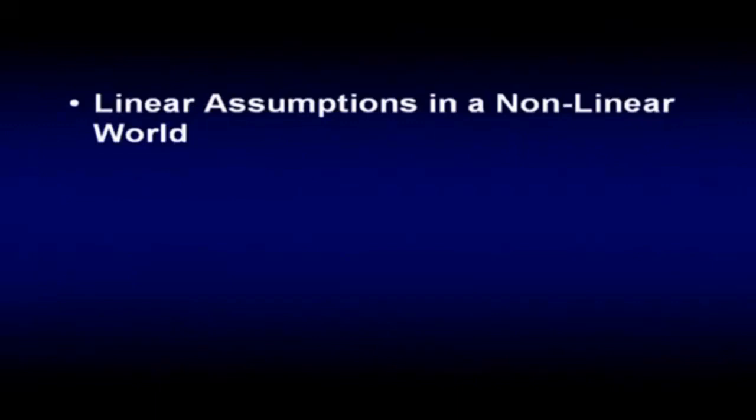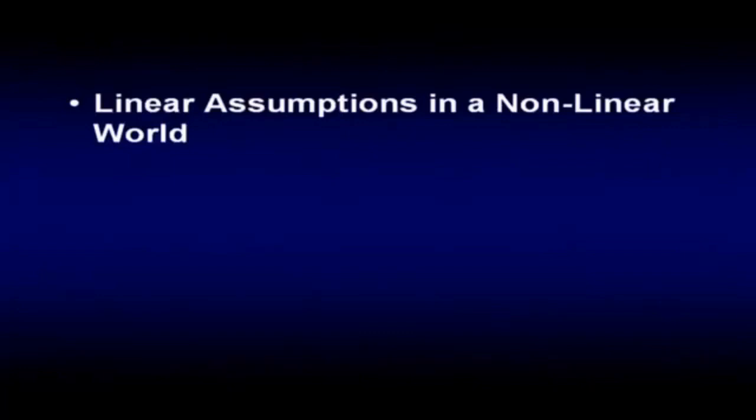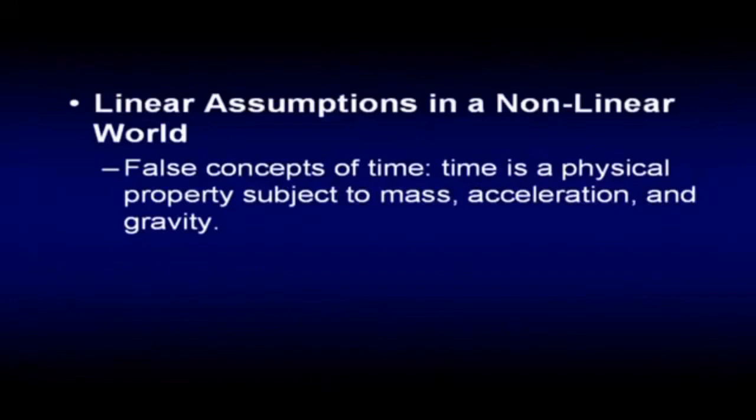We are guilty of making linear assumptions in a non-linear world. The minute we discover that the world is digital, that makes it by definition non-linear — it's made up of discrete pieces. We all assume everything linearly: tomorrow will be like yesterday, next week like last week, next month like last month. We do that because it's practical, and yet in our heart of hearts we realize there's a risk of running into a non-linearity. Time is a physical property subject to mass, acceleration, and gravity. We need to understand that time is not uniform or constant.